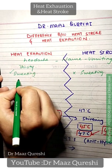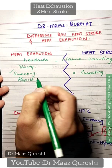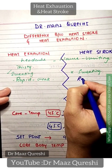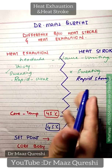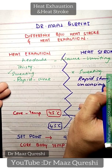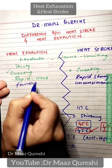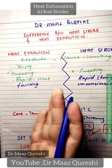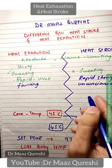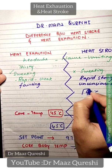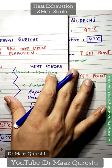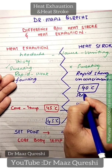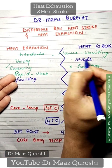In heat stroke, you will have a throbbing, rapid, and strong pulse. There are also chances of unconsciousness in heat stroke, whereas in heat exhaustion you can only have fainting — not a full loss of consciousness. The core body temperature in heat stroke is high — above 40 degrees Celsius. You can have seizures and muscle damage, leading to unconsciousness.